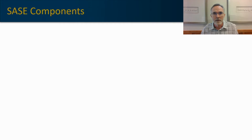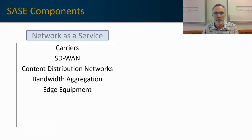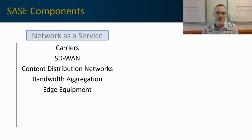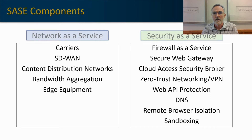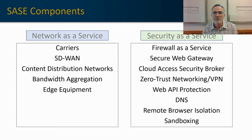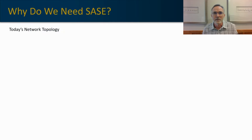SASE has components in each of two categories that will ultimately be unified. Under network-as-a-service, it includes carrier services, software-defined wide area networking (SD-WAN), content distribution networks, bandwidth aggregation providers, and edge equipment. On the security side, there are many more components: firewall as a service, secure web gateways, CASB (cloud access security brokers), zero trust networking, secure remote access or VPNs, web application protection, DNS services, remote browser isolation, and sandboxing. The greater number of security components is why SASE is really more of a security conversation than a networking conversation.